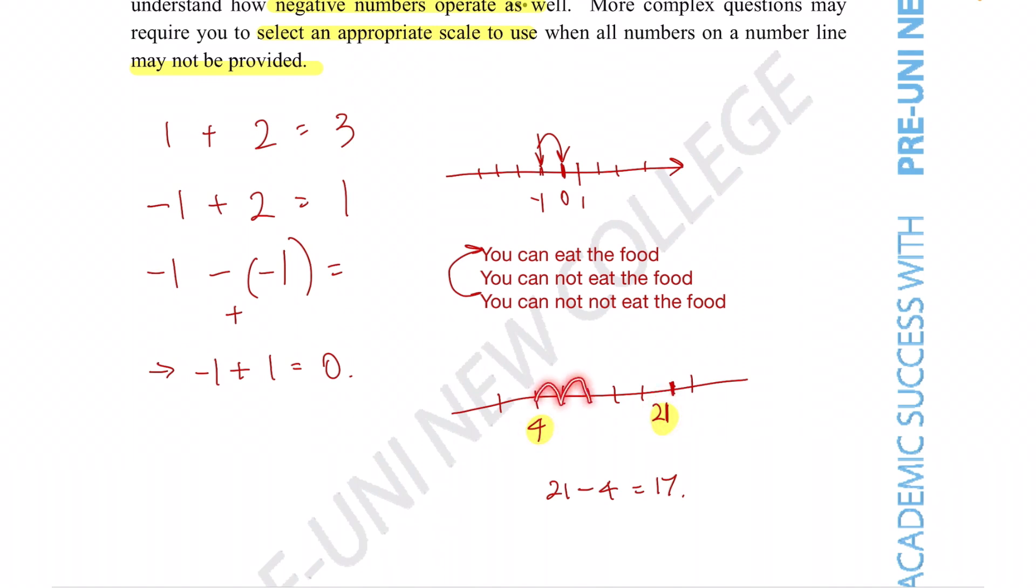So that would be 1, 2, 3, 4, 5 intervals between. So what you do is divide that number you found by the number of intervals.